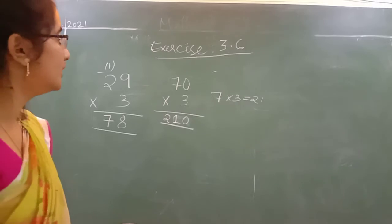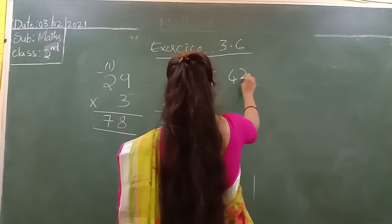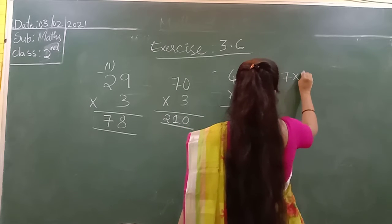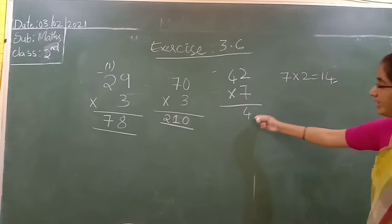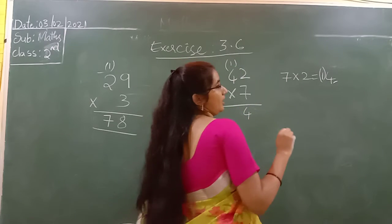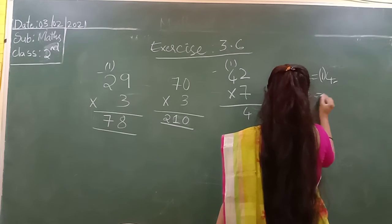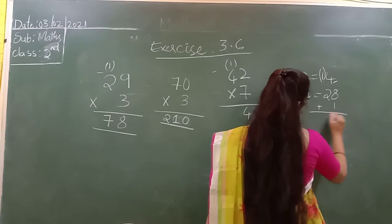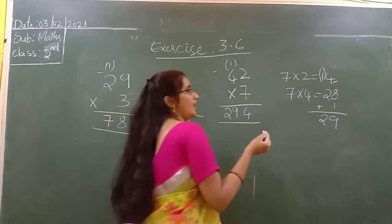Next: 42 into 7. 7 into 2 is 14 — write 4 in the 1's place and take 1 as carry. Next, 7 into 4 is 28, plus 1 carry is 29. So the answer is 294.